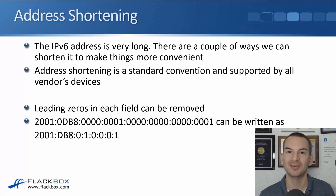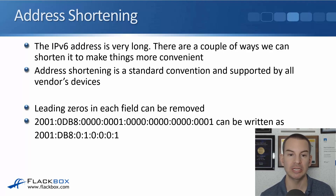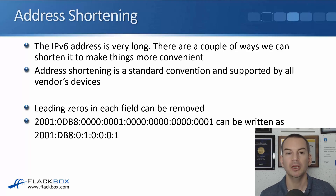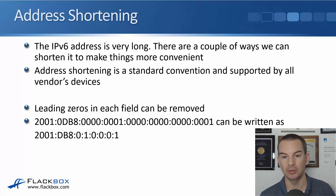The IPv6 address is very long — it took about a minute to read out that big long address. Thankfully, there are a couple of ways we can shorten it to make things more convenient. Address shortening is a standard convention supported by all vendors' devices. The first way is that leading zeros in each field can be removed.